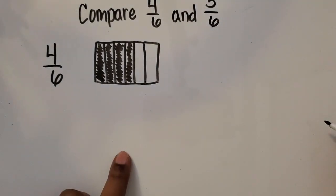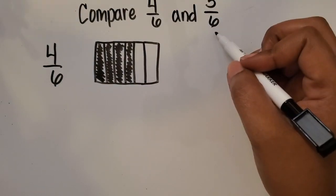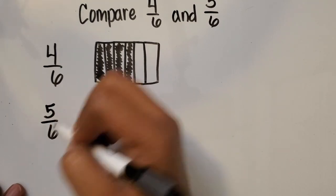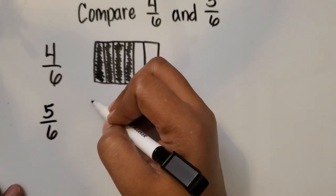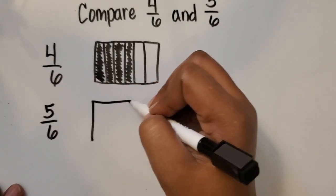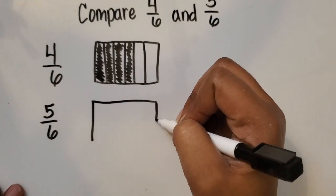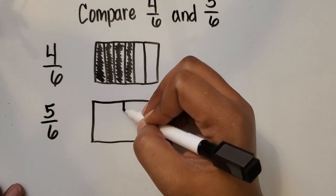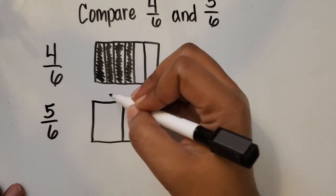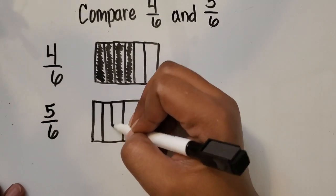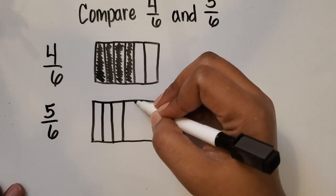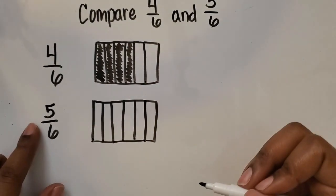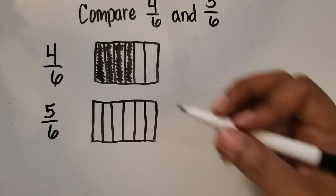In the next model, I'm going to represent 5/6. I'm partitioning the whole into 6 just like the first model. This time we're going to shade in 5/6.